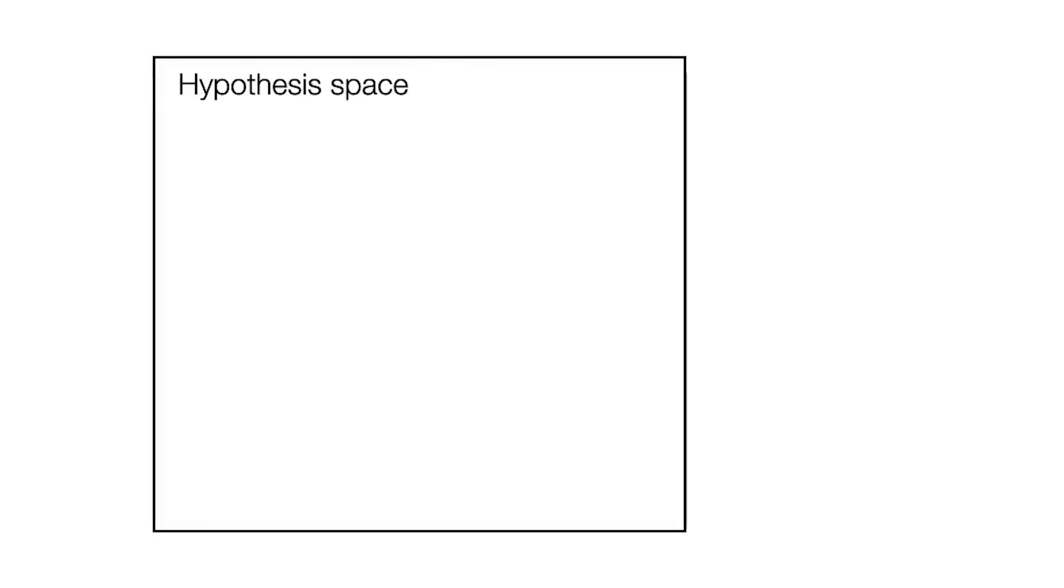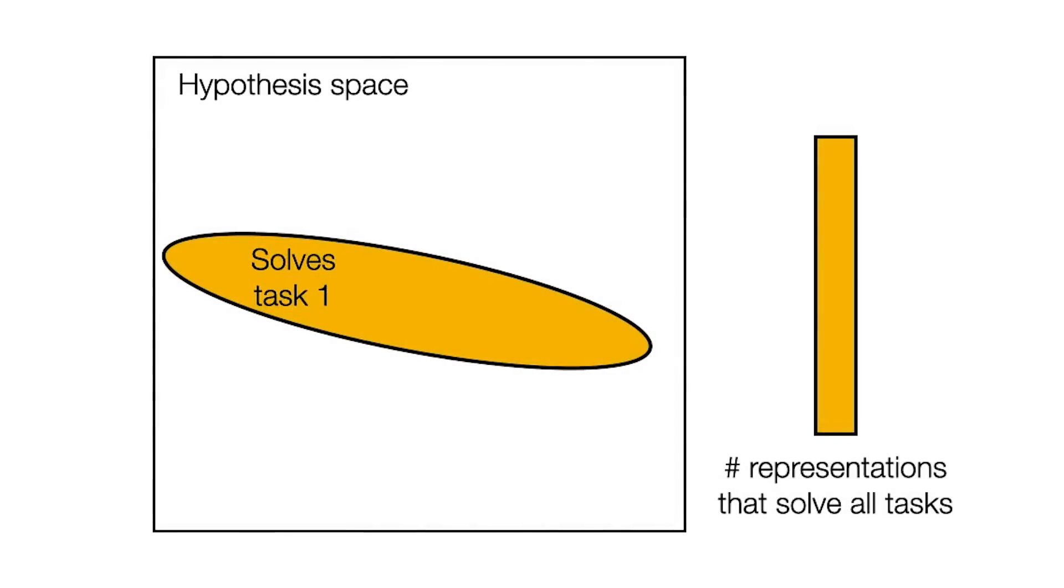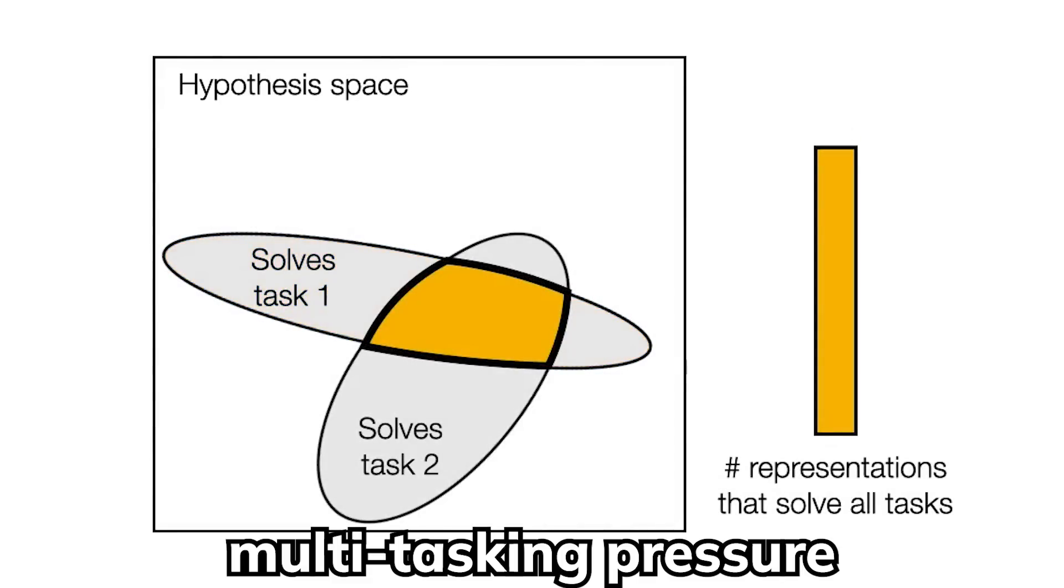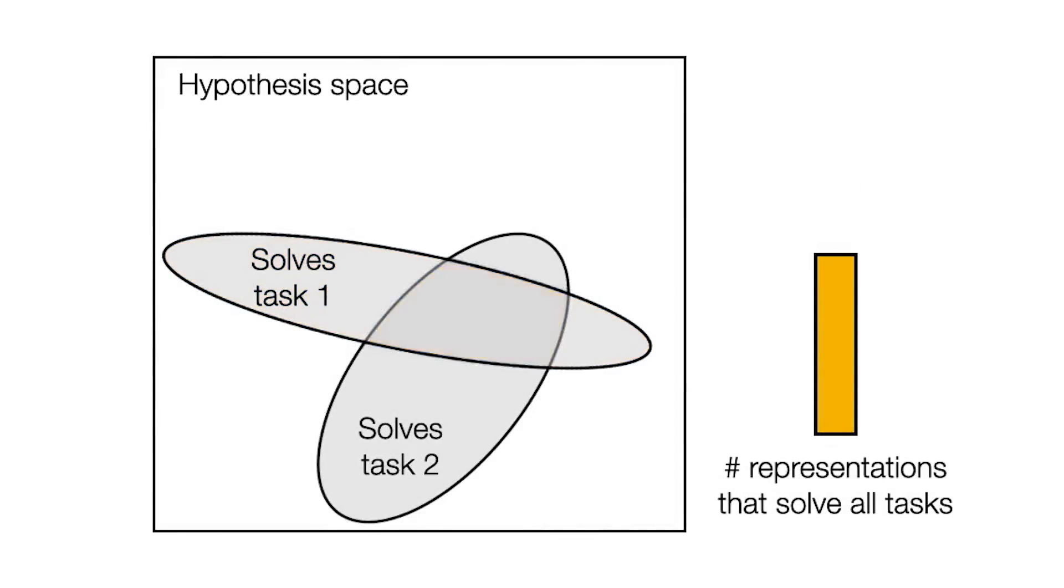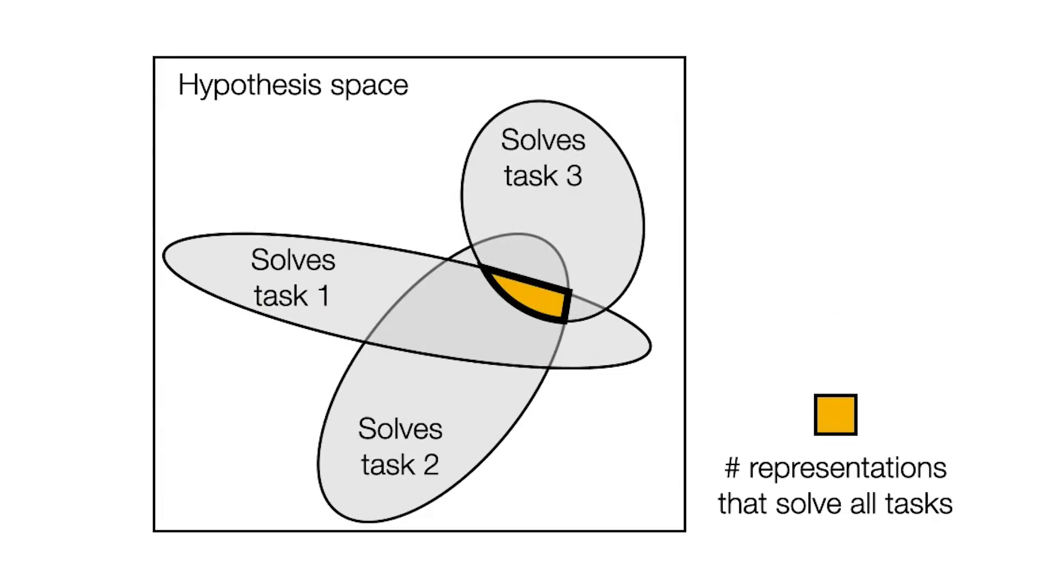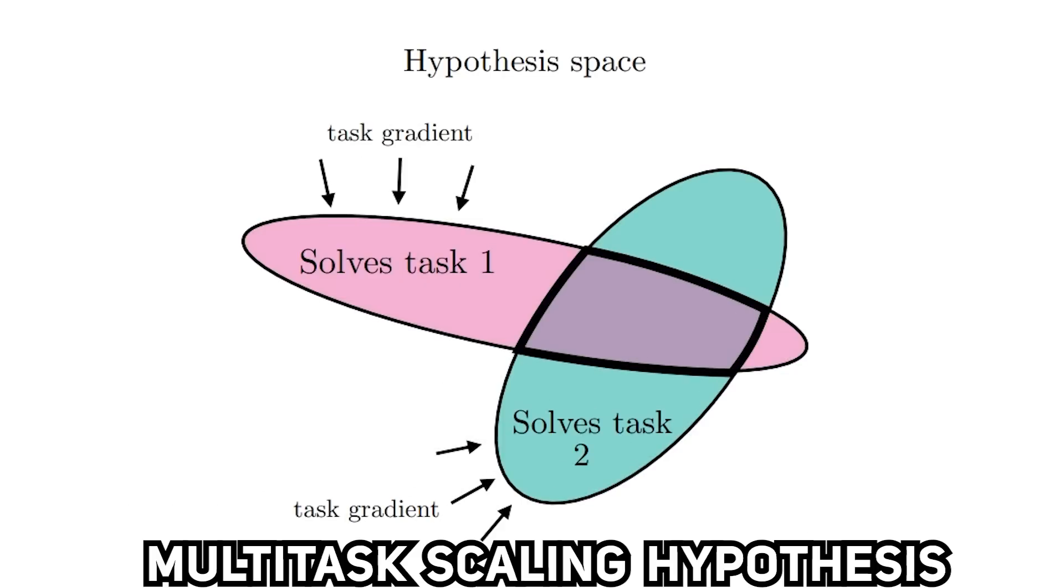The authors argue that, as the amount of tasks a model needs to solve increases, there would be a multitasking pressure generated that there would be less and less representations in the function space that would satisfy all the demands at once. So they propose the multitasking scaling hypothesis.